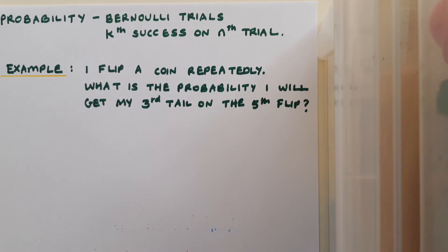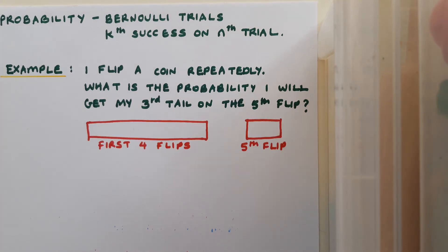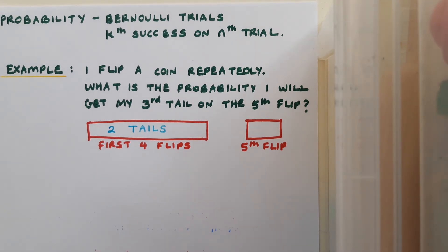So to deal with this question, what I need to do is actually take my situation and split it up into two parts. The first four flips and the fifth flip by itself. And so what I actually want to happen here is that over the course of the first four flips, I want to get two tails. And on the fifth flip, I want to get a tail as well.